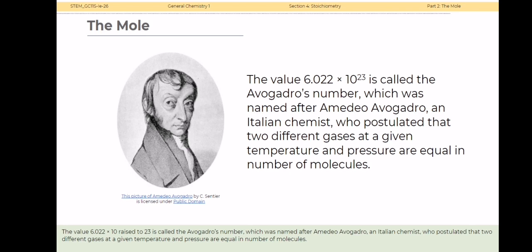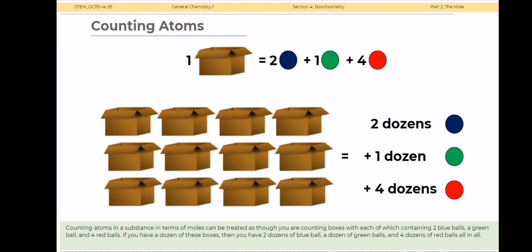By looking at the picture, counting atoms in a substance in terms of molecules can be treated as though you are counting boxes, each containing two blue balls, a green ball, and four red balls. If you have a dozen boxes, then you have two dozens of blue balls, a dozen of green balls, and four dozens of red balls.